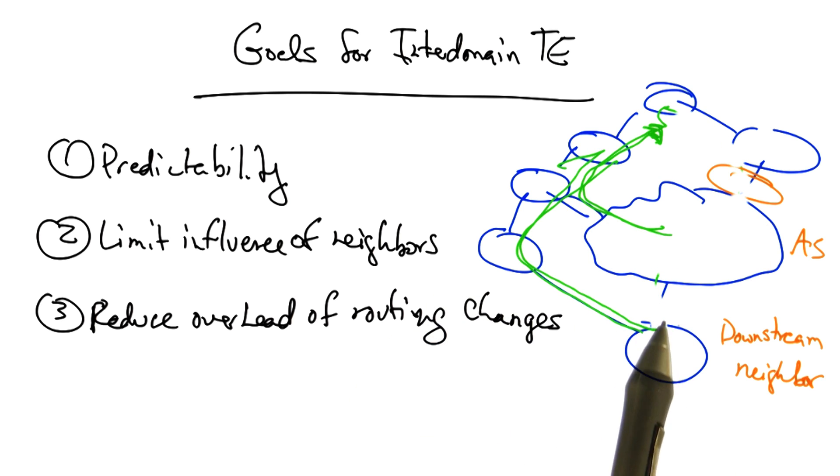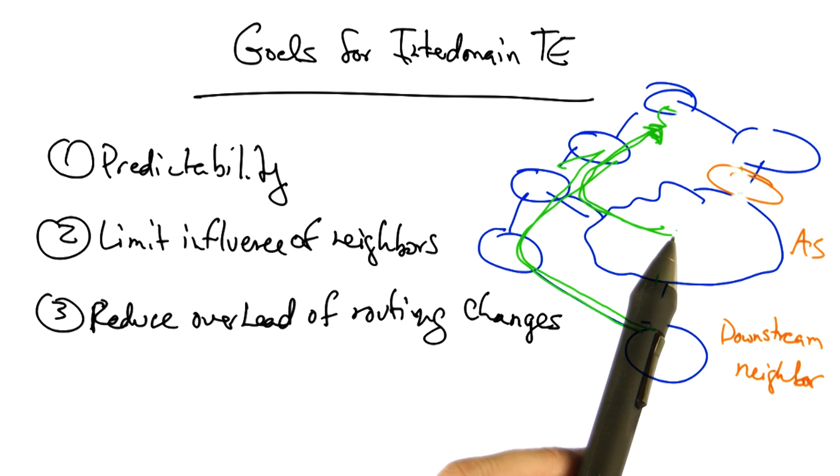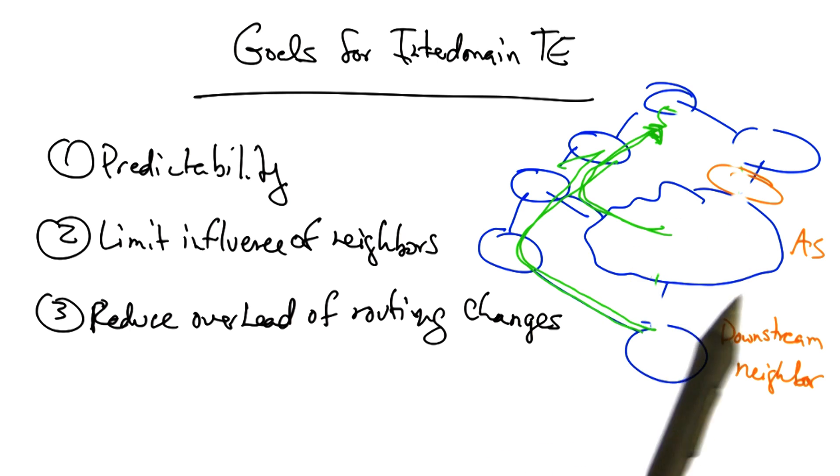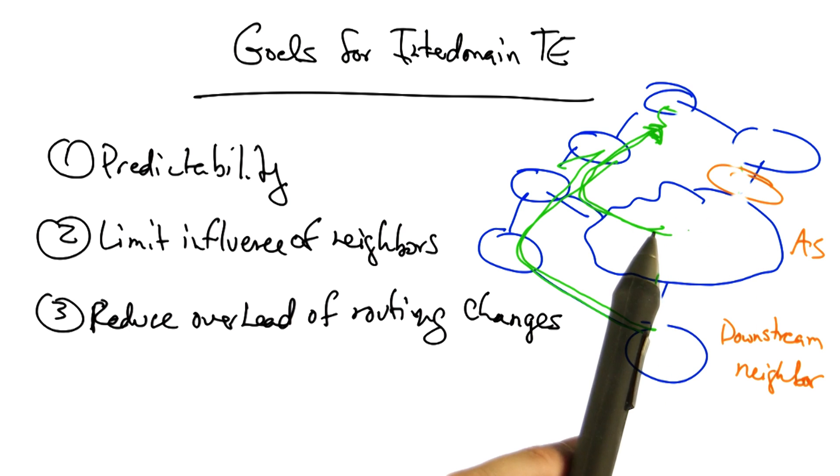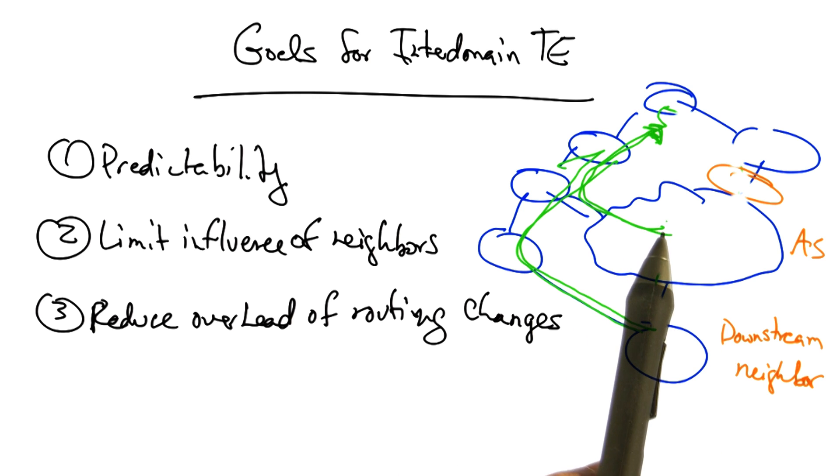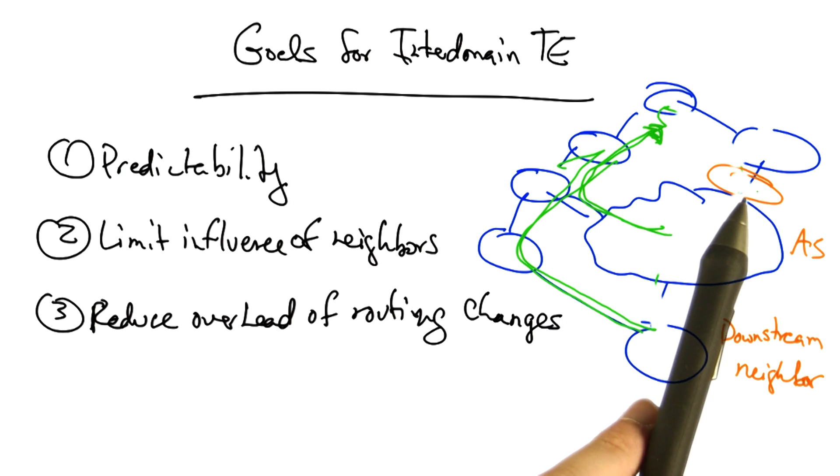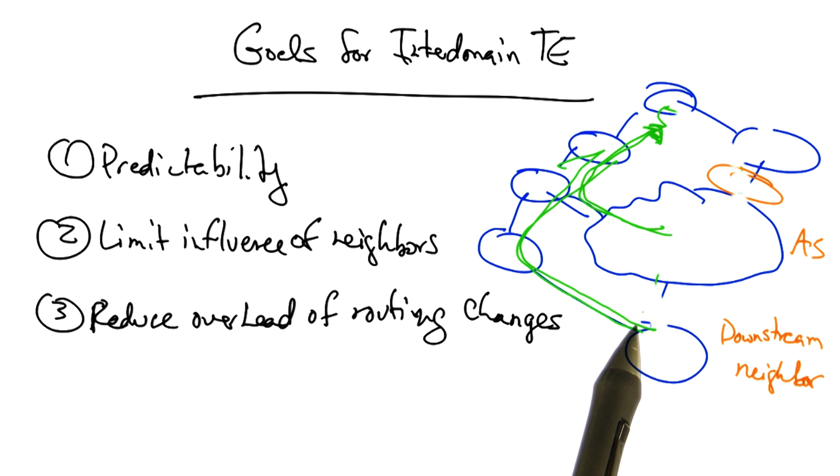In response, the downstream neighbor might decide not to send its traffic for that destination through this autonomous system at all, thus affecting the traffic matrix that this AS sees. So all the work that went into optimizing traffic load balance for this AS is for naught because the change that it made effectively changed the offered traffic loads and hence the traffic matrix. One way to avoid this type of problem and achieve predictable traffic flow changes is to avoid making changes like this that are globally visible.